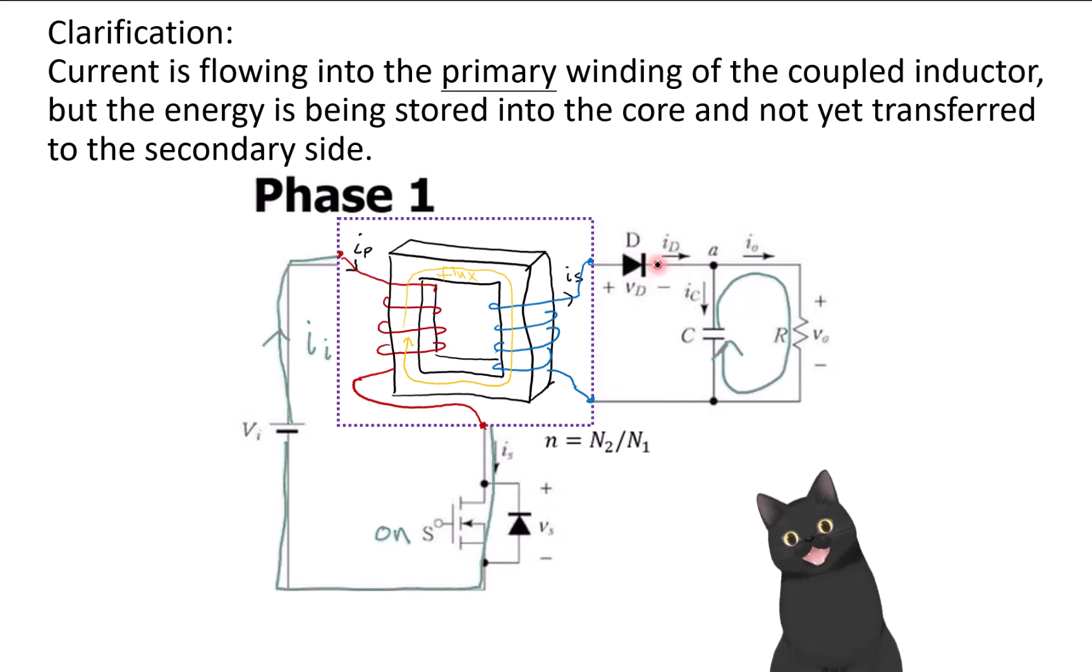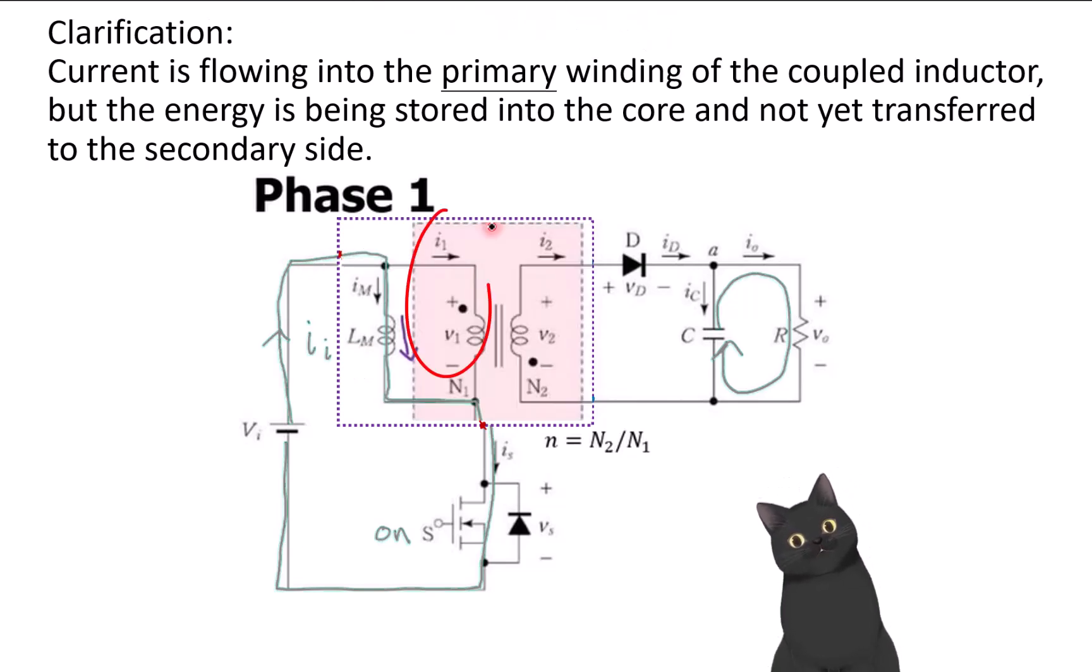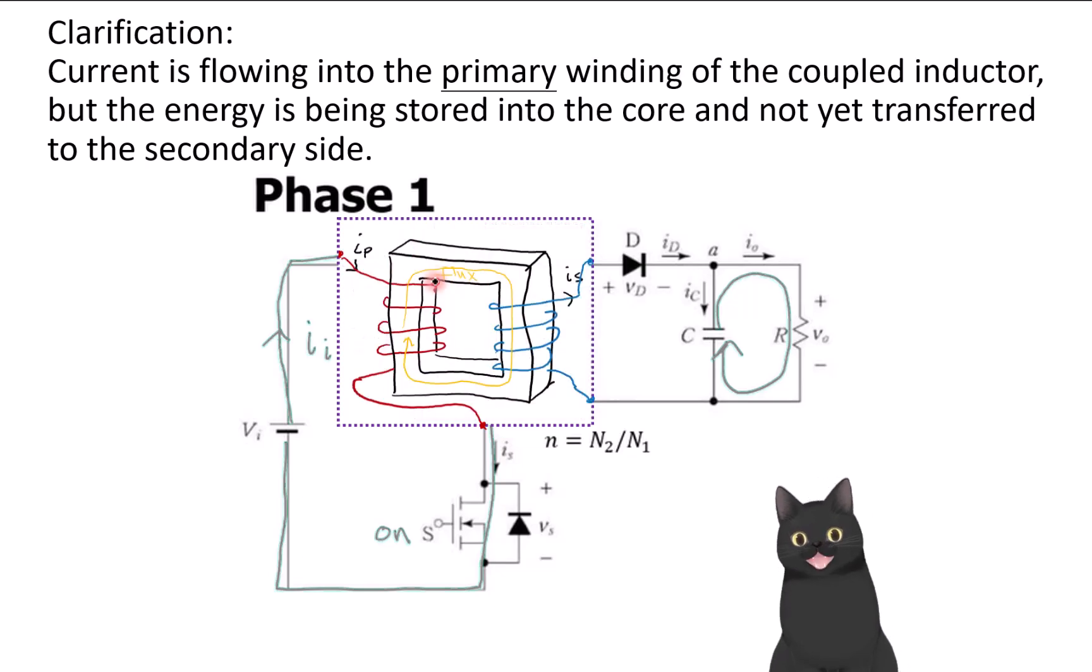But there's no current on the secondary side because current is flowing into the primary side of the coupled inductor, but the energy is being transformed into the core and not yet transferred to the secondary side. That will happen on the second phase of the flyback converter. Yes, current Ip is flowing, but in the ideal transformer, I1 is not flowing during phase one of the flyback converter.